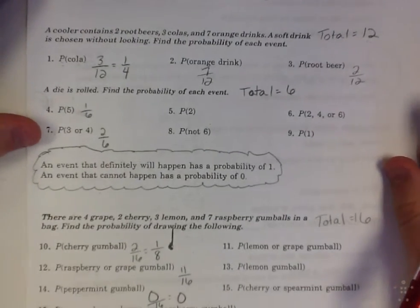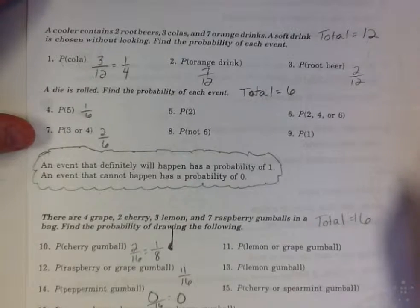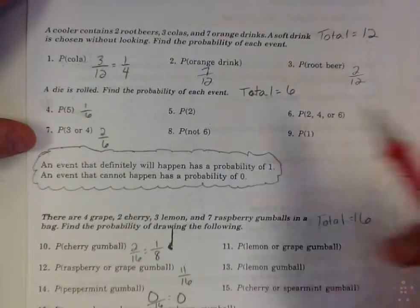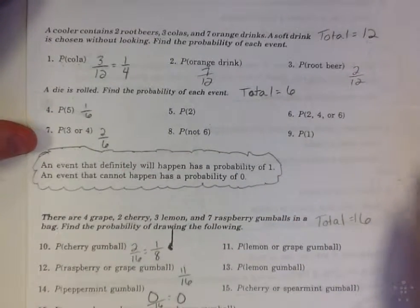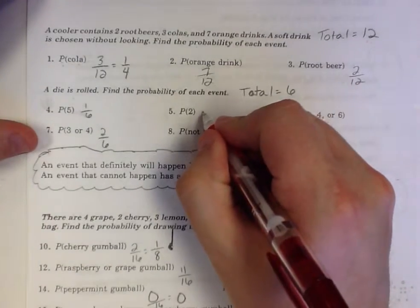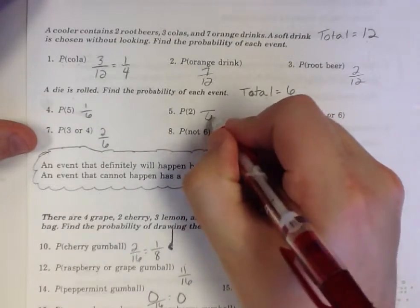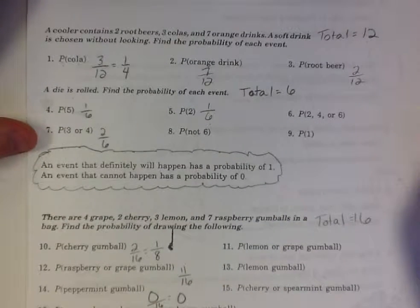A die is rolled — find the probability of each event. On a die there are six sides: one, two, three, four, five, six. So our total is six. All of my fractions are going to be over six. The probability of rolling a two — out of six, I have a one-in-six chance of rolling a two. One out of six — probability of two.